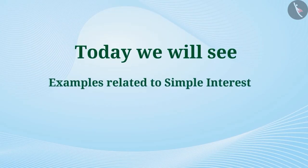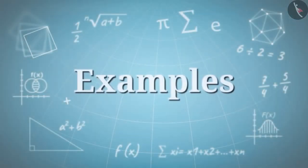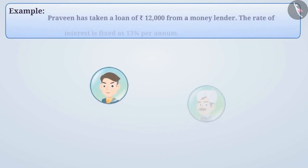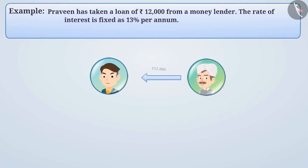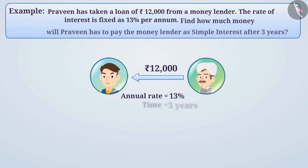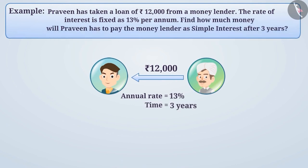Today we will see some examples related to simple interest. Praveen has taken a loan of Rs 12,000 from a money lender. The rate of interest is fixed as 13% per annum. Find out how much money Praveen has to pay the money lender as simple interest after 3 years.